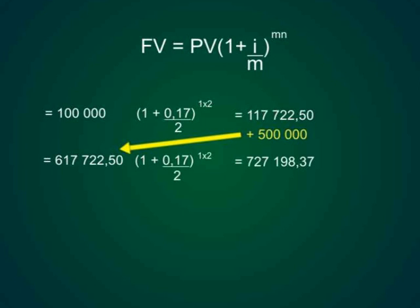Add that to the 500,000 which gives 617,722 Rand and 50 cents. That amount we are going to invest over another year to the point where he invests the 400,000. So that becomes 617,722 Rand and 50 cents open bracket 1 plus 0.17 over 2 close bracket to the power 1 times 2 which gives me an answer of 727,198 Rand and 37 cents.